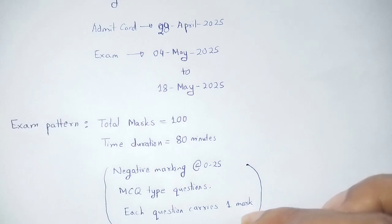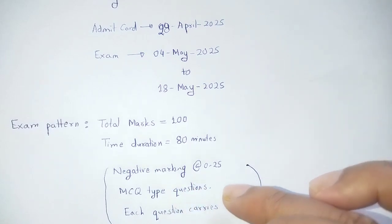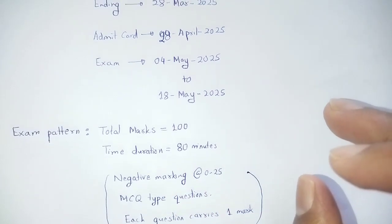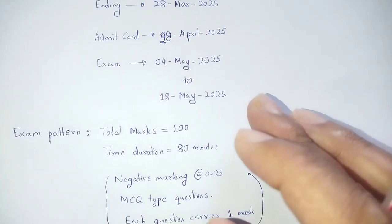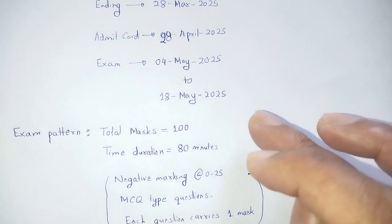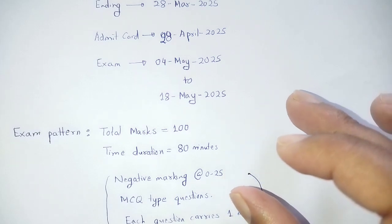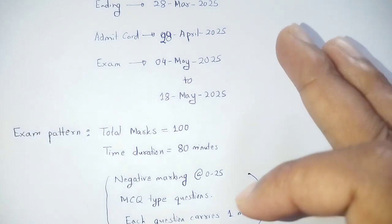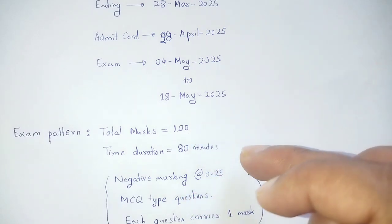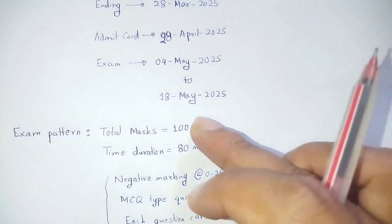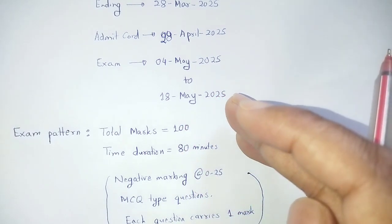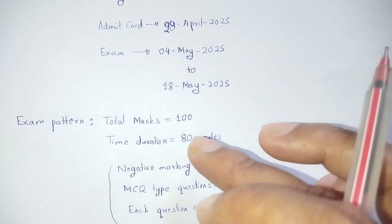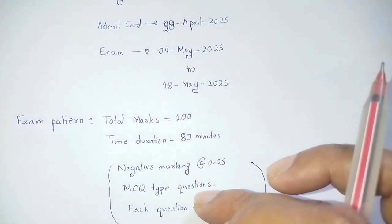Each question carries 1 mark. The format is multiple choice type questions — MCQ format — with negative marking of 0.25. The rank entrance mark is 100, and the score determines rank. Negative marking applies if you answer incorrectly.